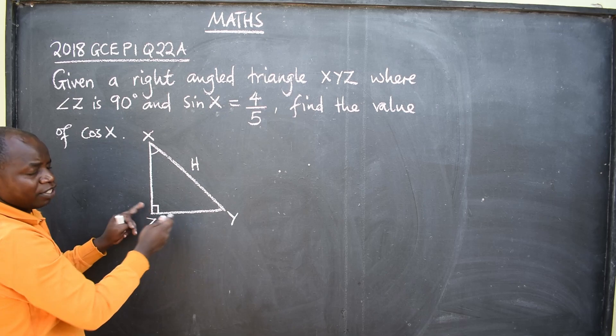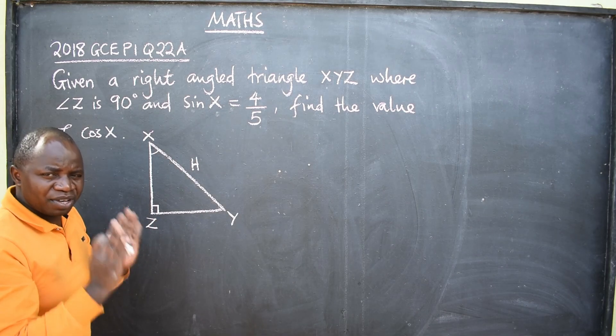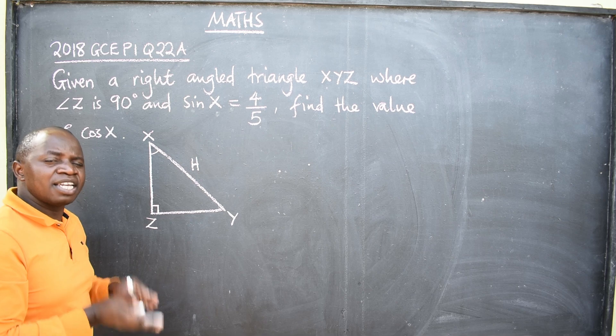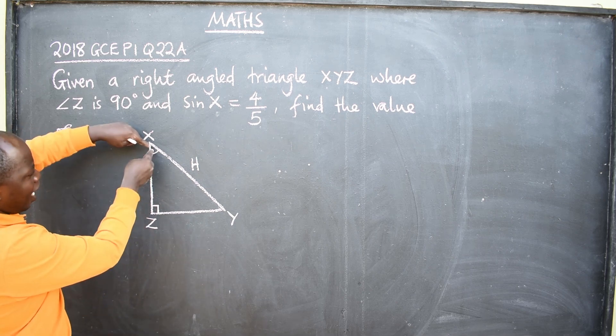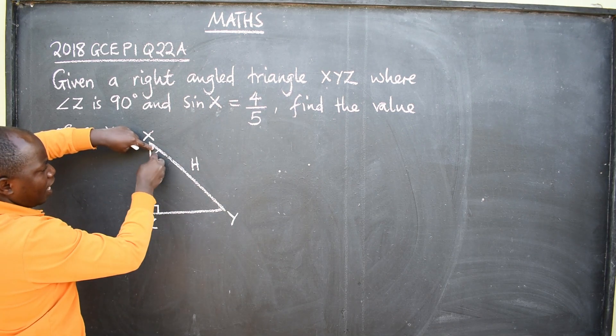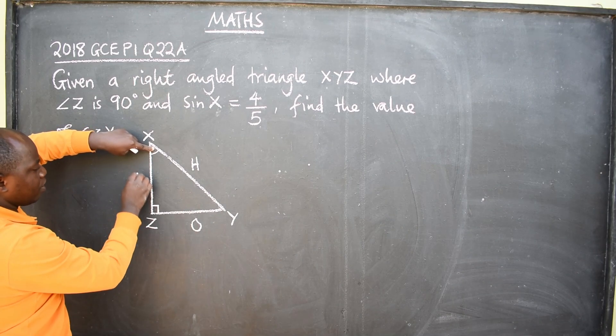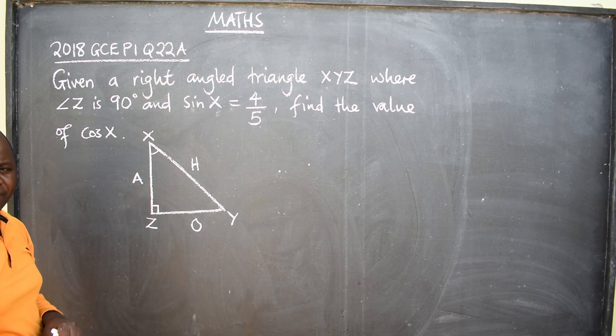Then the other two now, depending on where the angle is, one must be opposite, the other one should remain adjacent. So the angle is here, angle x. The angle is here, meaning this one will be opposite, then this one adjacent.